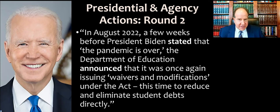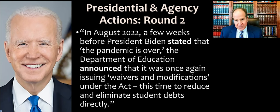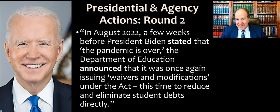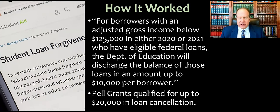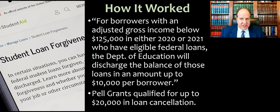I want you to note the court's use of suggestive language here — they're saying President Biden was about to state that the pandemic is over. That's different than the previous president declaring a state of emergency. Holding a press conference and saying sort of wishfully that things are over does not have the same legal significance as declaring a state of emergency. For borrowers with an adjusted gross income below $125,000 a year in either 2020 or 2021 who have eligible federal loans, the Department of Education would discharge the balance of those loans up to $10,000 per borrower, and Pell Grant recipients qualified for up to $20,000 in loan cancellation.